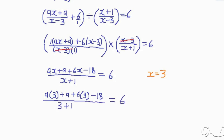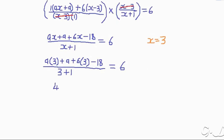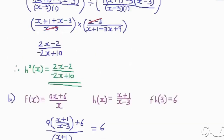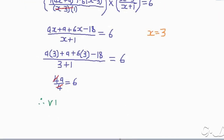Now we substitute x = 3 and simplify. After substituting x = 3 and simplifying, we get 4a over 4 = 6. The 4 cancels out, leaving a = 6. Therefore, the value of a is 6.